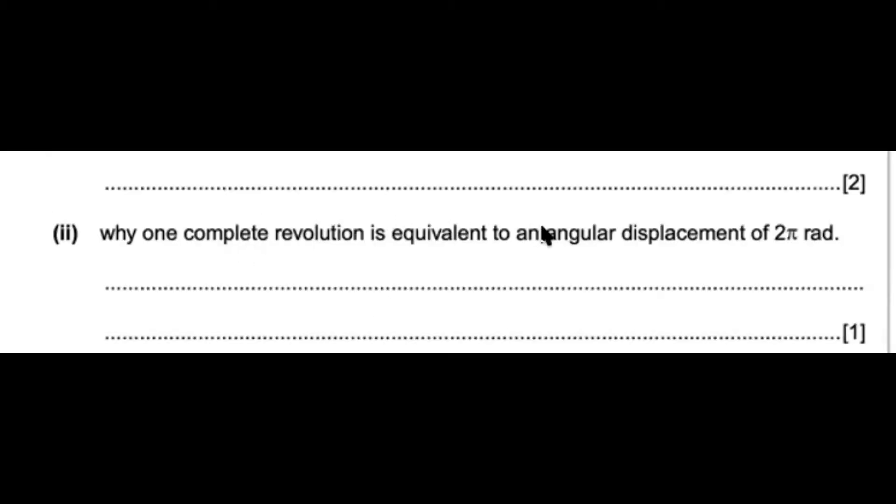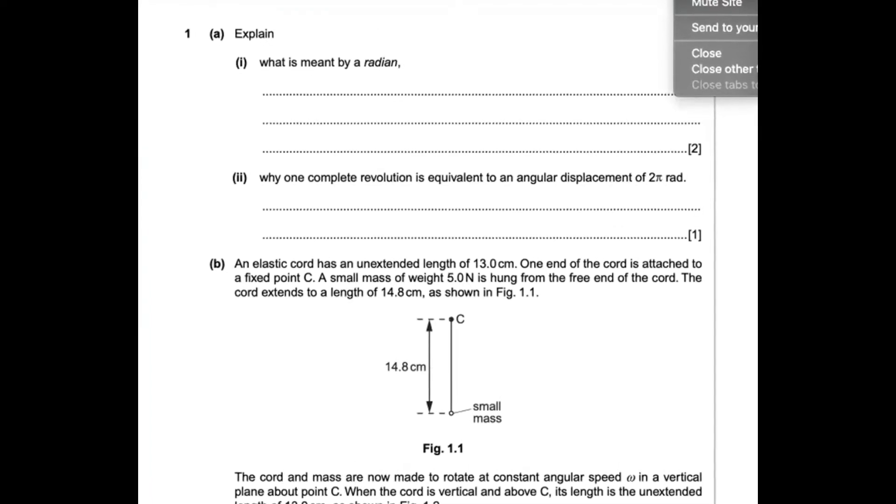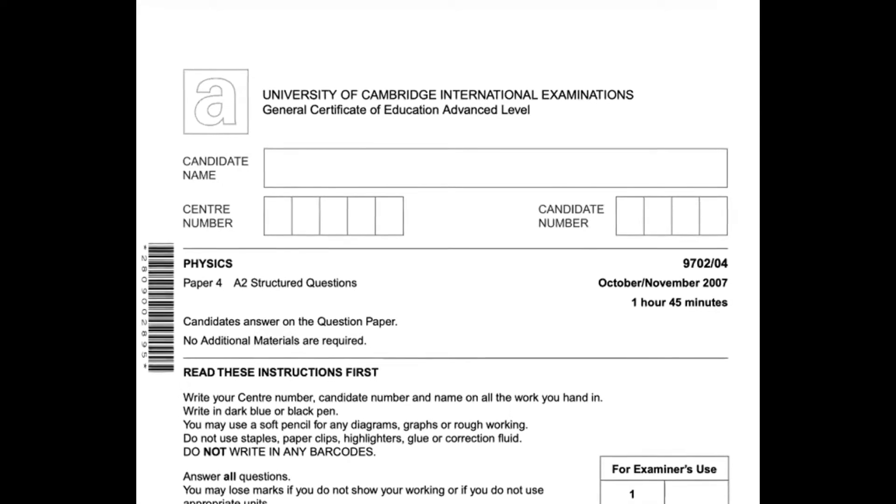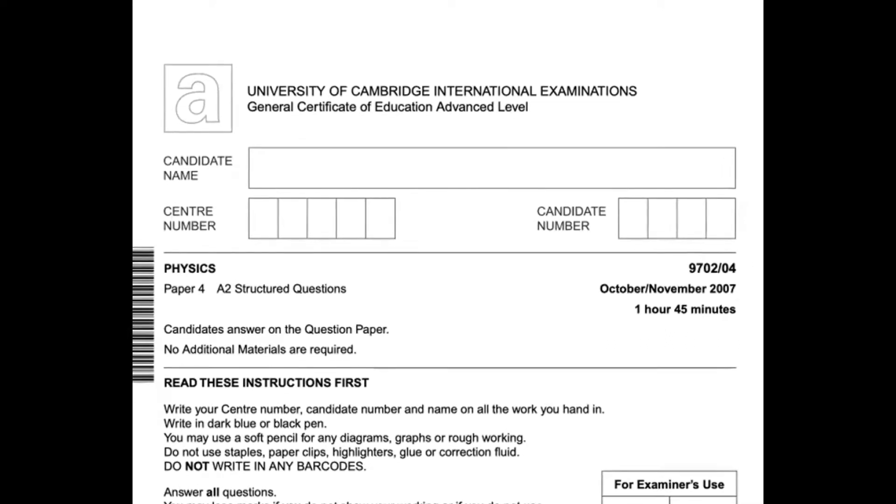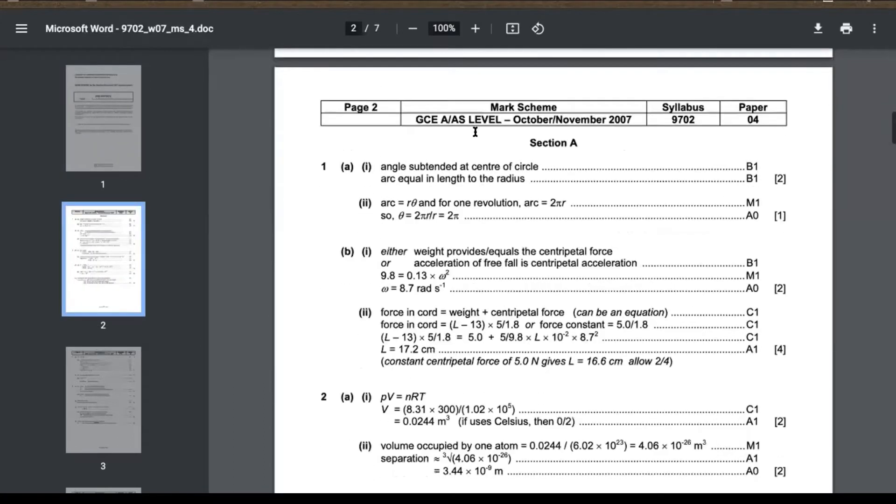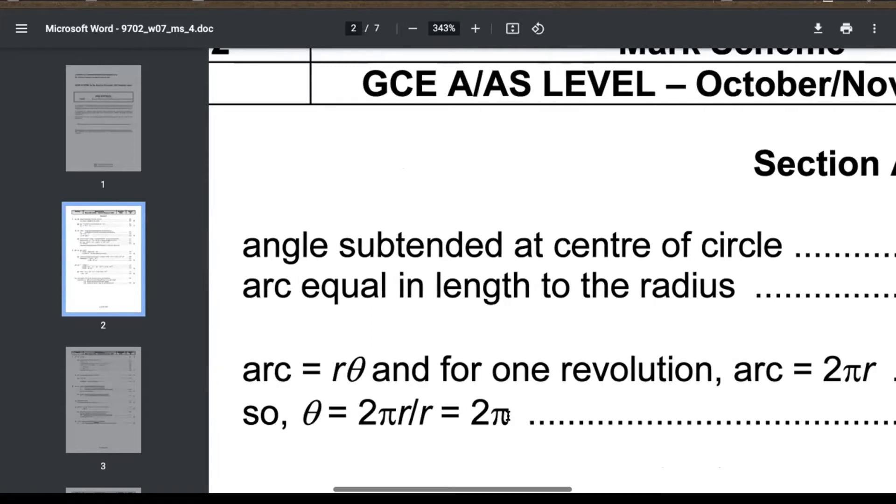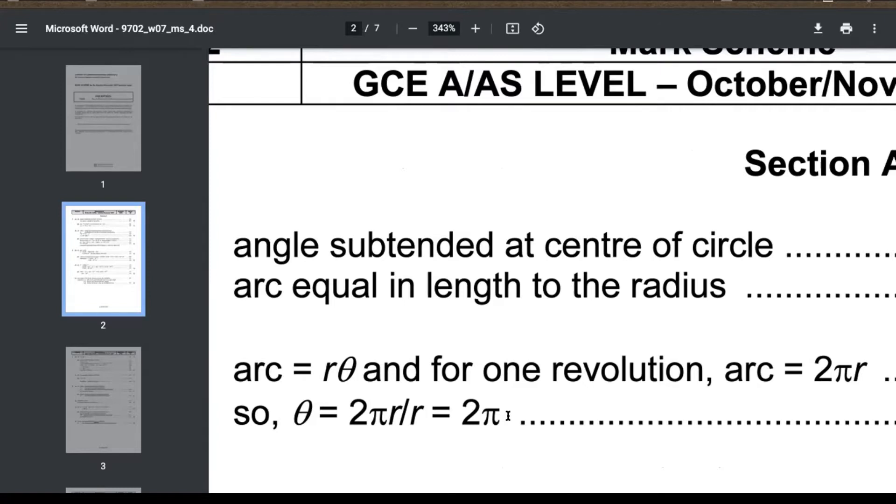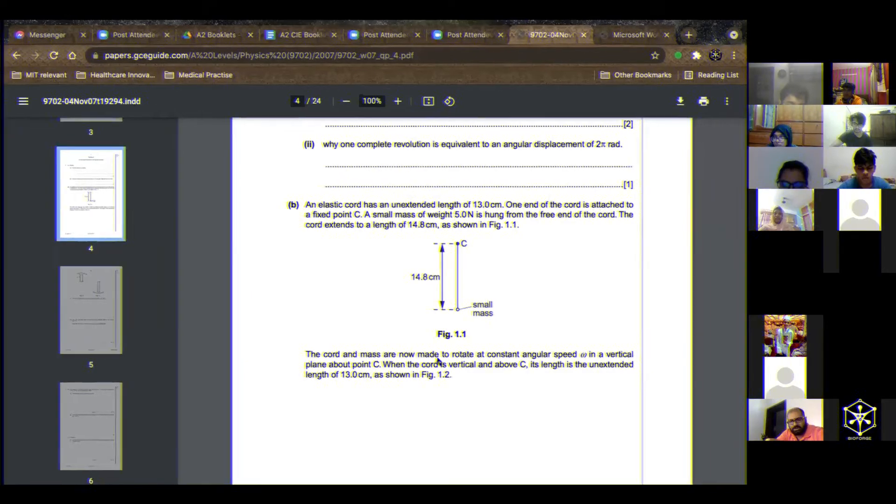Why is one complete revolution equivalent to an angular dispersion of 2π radian? There is a mathematical theory to it. Mathematically the length of the arc is r theta, and the arc equals 2πr, so theta equals 2π when it's the full circumference.